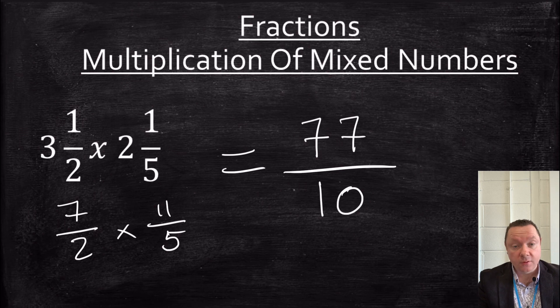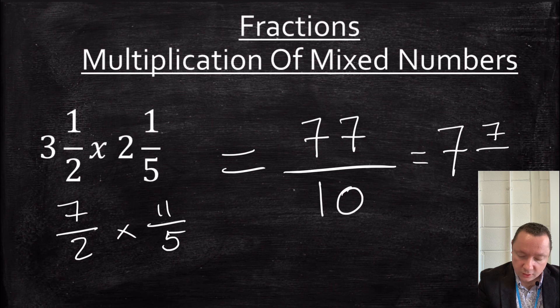I'm going to change it back to a mixed number just for the thought of it. So 10 goes into 77 seven times, with a remainder of 7 left over. So 7 and 7 tenths would also be a good answer.